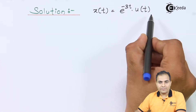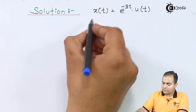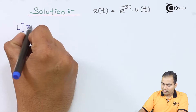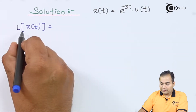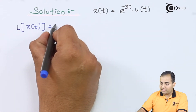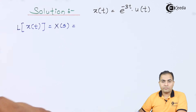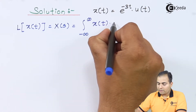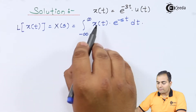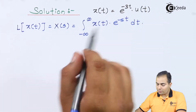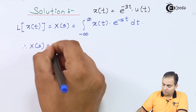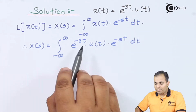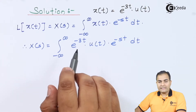x(t) is given as e^(-3t) · u(t). We will find the solution according to the definition of the Laplace transform. Applying Laplace to x(t), it is transformed into the Laplace domain and represented by X(s). The definition is: X(s) = integral from minus infinity to infinity of x(t) · e^(-st) dt. Now I will substitute the value of x(t), which is e^(-3t) · u(t).